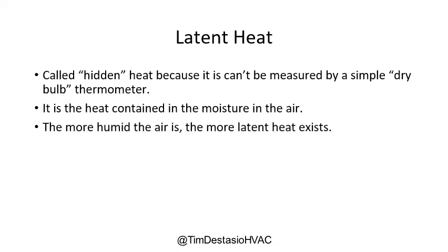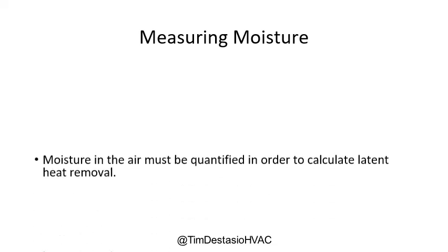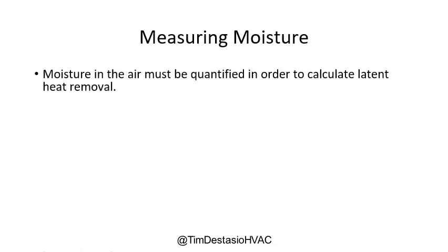The more humid the air is, the more latent heat exists. Latent heat is also calculated in BTUs per hour. Let's pause for a second and talk about measuring moisture. Moisture in the air has to be quantified in order to calculate the latent heat removal. It may be hard to think about there being moisture in the air, but if you've ever been on a humid day and seen a haze in the air, maybe a foggy day, that's a good example of moisture in the air.